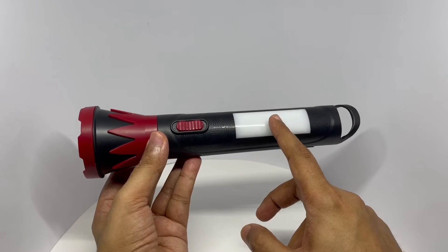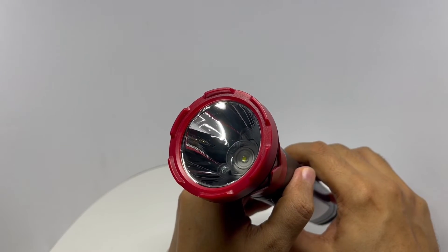This is the lantern light. That's how the torch LED looks.